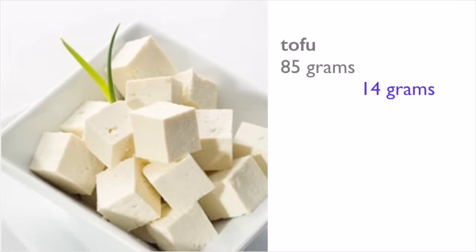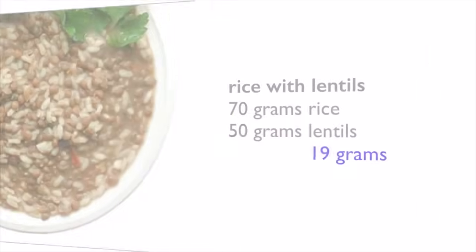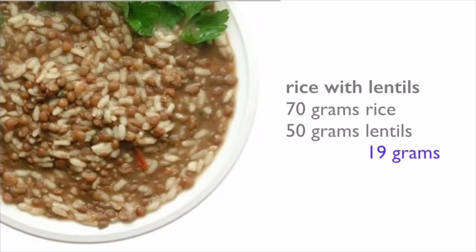There are 14 grams of proteins in a three ounce serving of tofu. A serving of brown rice with lentils will provide 19 grams of highly quality proteins.